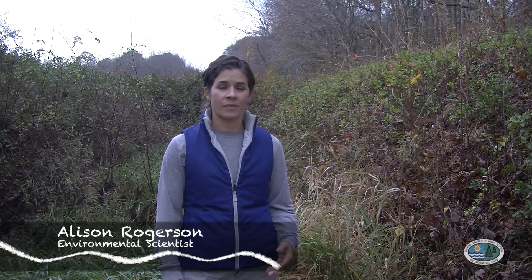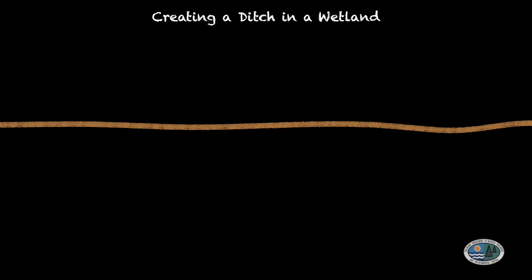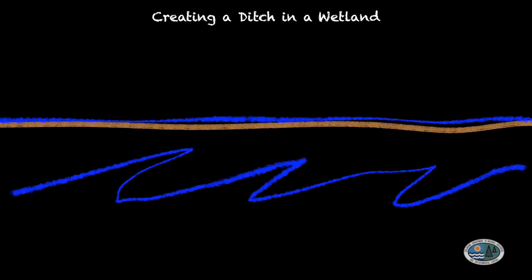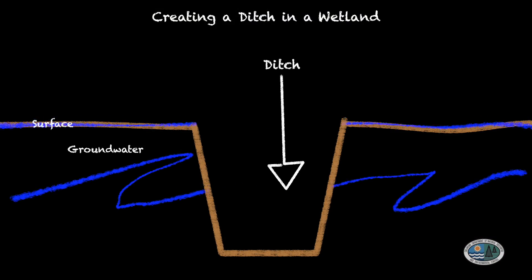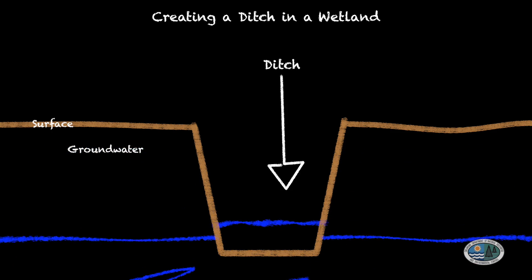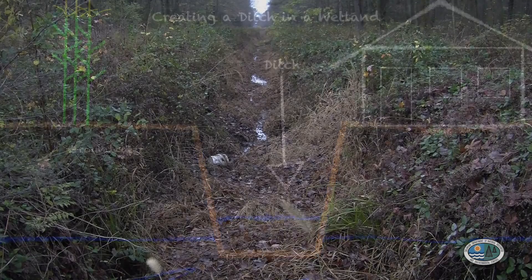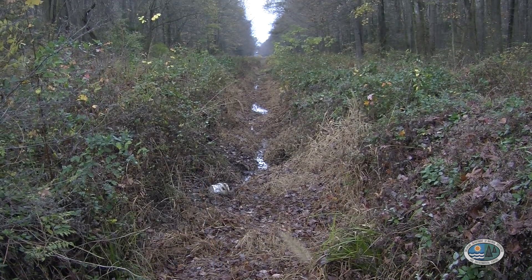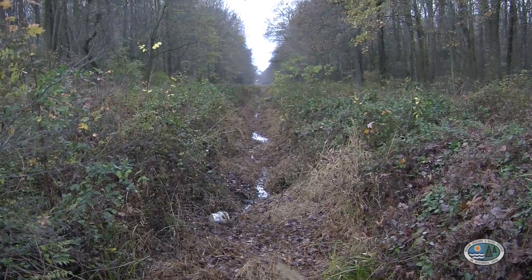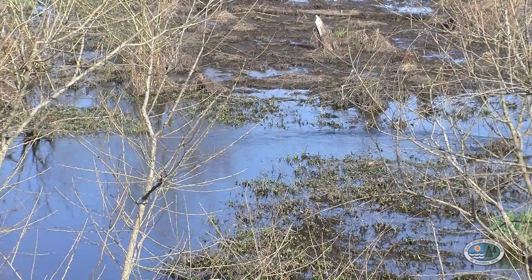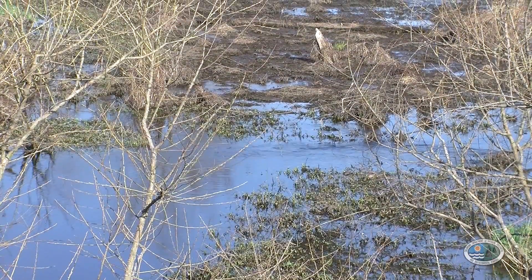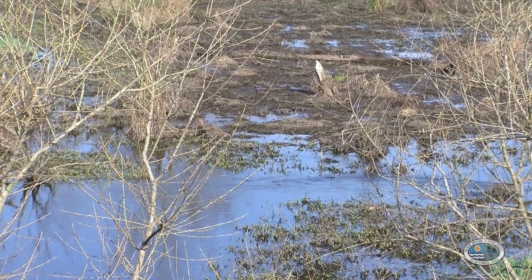Ditching and draining wetlands is one of the human activities that has the most impact on wetland health. Historically, lands that were deemed too wet to develop or successfully farm were ditched and drained with the purpose of making drier land. The problem is, once these lands have been drained of water, they're no longer functioning as a wetland. Ditches prevent water from soaking in and being released slowly after storm events.